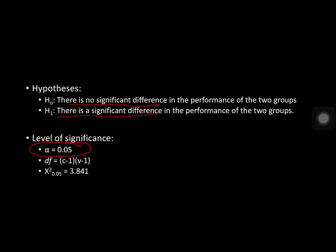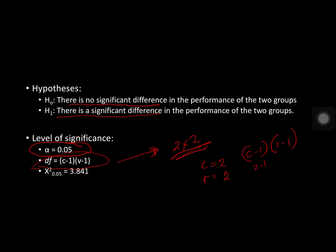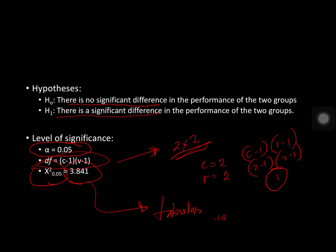For the degrees of freedom, since we are going to create a 2 by 2 table, our columns equal 2 and rows equal 2. That gives us column minus 1 times row minus 1, which is 2 minus 1 times 2 minus 1, giving us 1 degree of freedom. The chi-square tabular value at 0.05 with 1 degree of freedom is equal to 3.841. This is our tabular value.